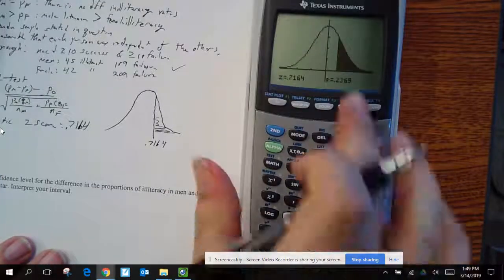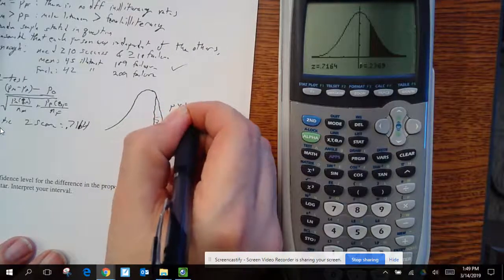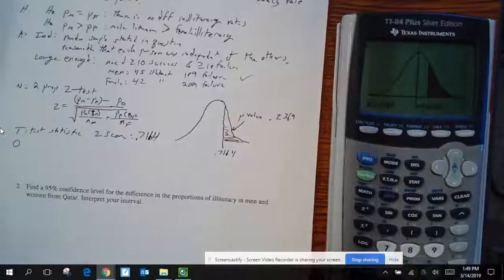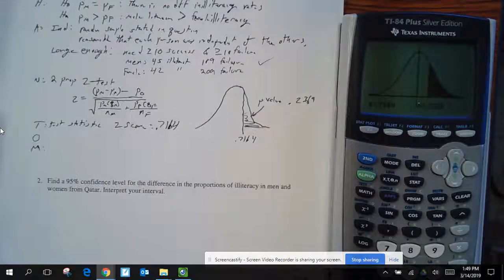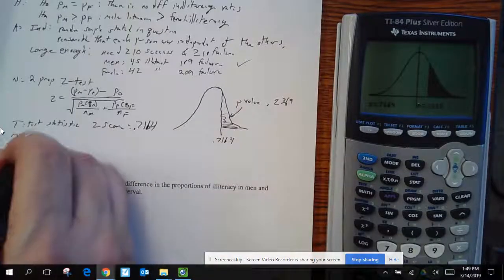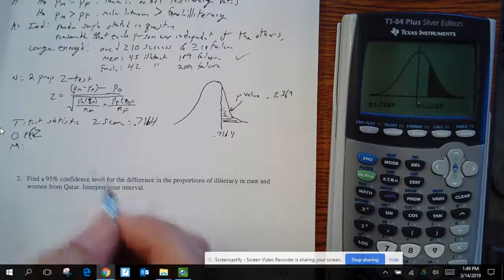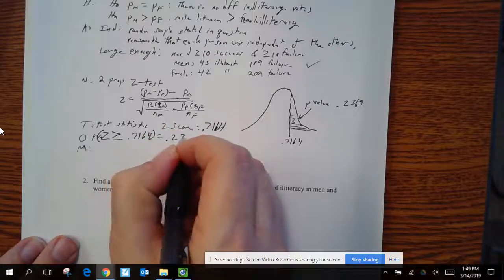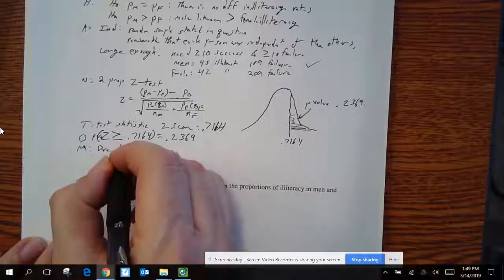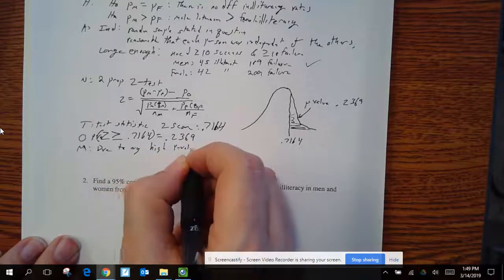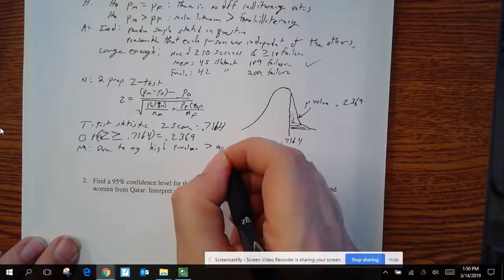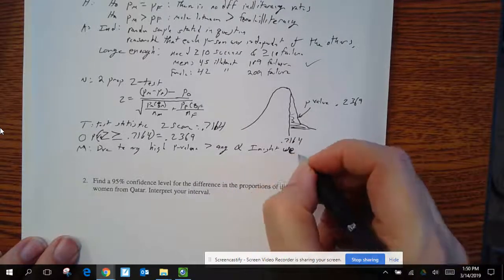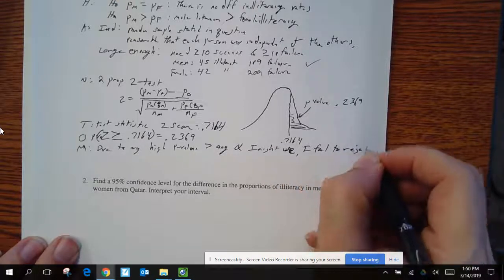My p-value is right next to it, 0.236. And then I also covered my O, obtain a p-score, which we've done. M, I need to make a decision. Well, I use my p-value because that's why I obtain it. And this is the probability z would have been greater than or equal to 0.7164, equals 0.2369. Make a decision. Well, due to my high p-value, which is greater than any alpha I might use, I fail to reject the null hypothesis.